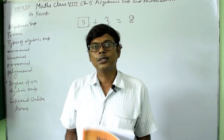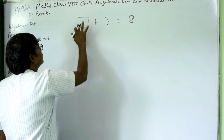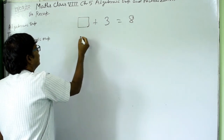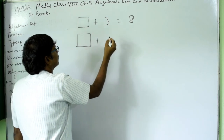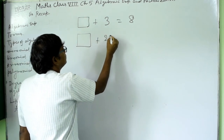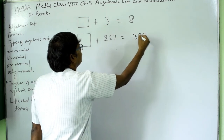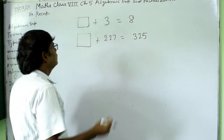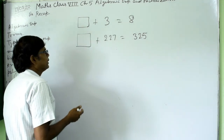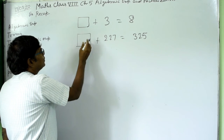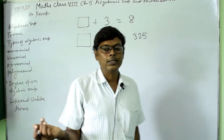Now when you are in Class 8, we don't use that box symbol anymore. Suppose you have a larger number like 200 plus something equals 325. Then it will be a little bit difficult to answer using just the box symbol.